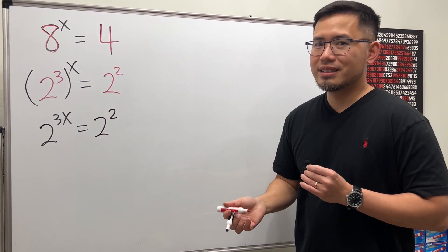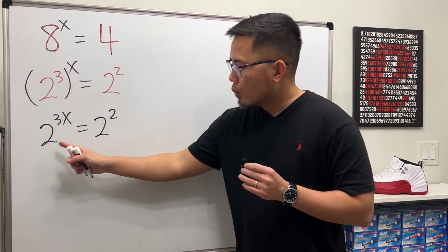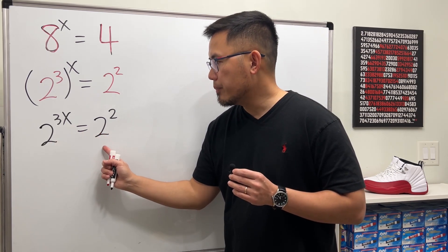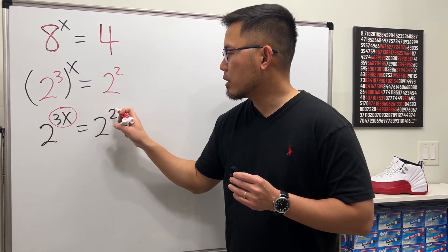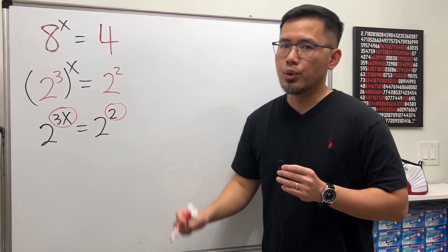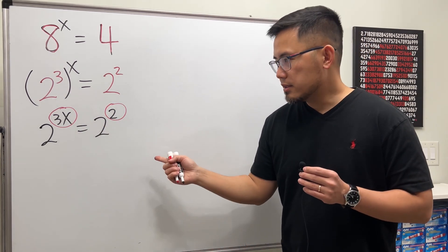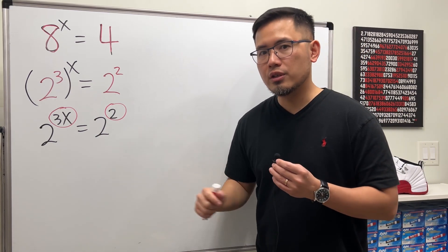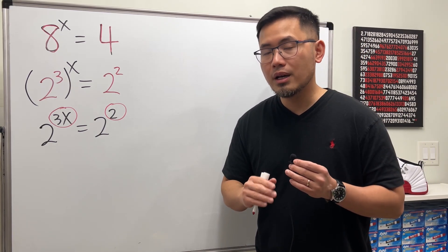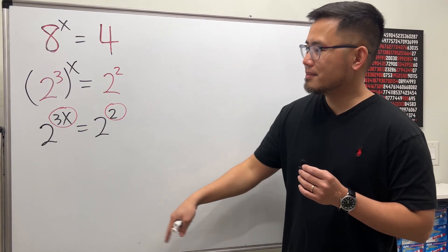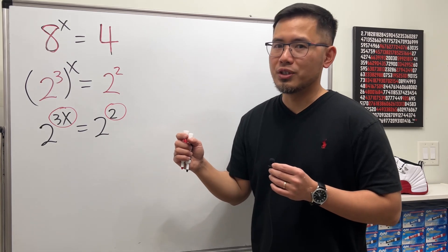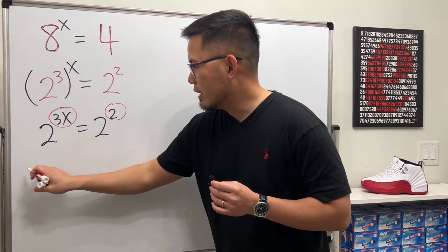Now what do we do next? Here is the key: whenever we have an exponential equation, if the bases are equal, then the power, right, the exponent here, must be equal to each other. This is correct for exponential functions because exponential function is what we call a one-to-one function, and one-to-one function because when the outputs are equal, that means the input must be equal to each other.